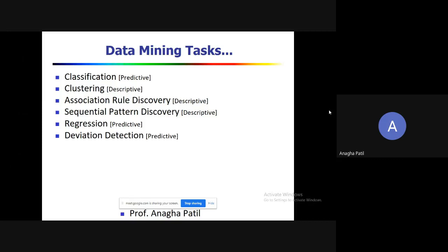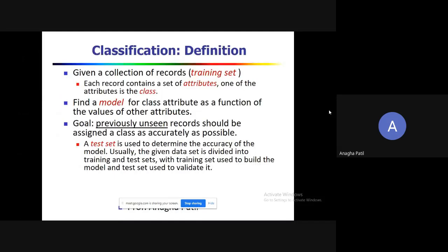Let's go into classification. Classification basically involves a collection of records, also called a training set. For every dataset you will have a certain number of attributes, columns, or dimensions. Out of these attributes, a particular attribute is defined as the class or class label.